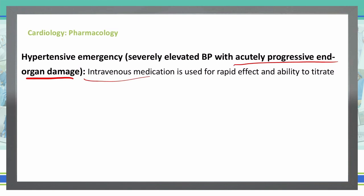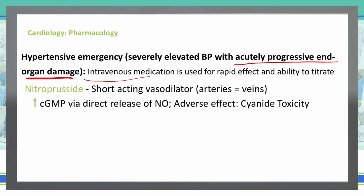We can titrate IV medication very quickly if we're not giving enough or if we're giving too much — we cannot do that as easily with oral medications. So in a hypertensive emergency we're going to use nitroprusside or fenoldopam.